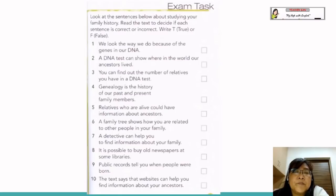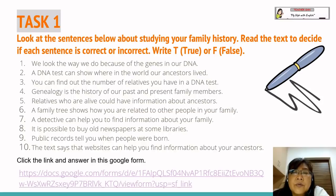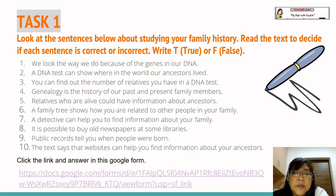Next you have the exam tasks from your textbook. Task one: Look at the sentences below about studying your family history. Read the text to decide if each sentence is correct or incorrect. Write true or false. There are 10 statements. Pupils can write the answers in the exercise book or in a Google form — there is a link for the Google form your teacher has created.